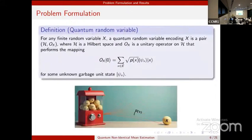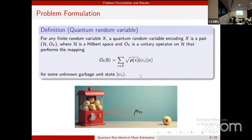Let me talk about the problem formulation. For the quantum estimation problem, the standard input model is a quantum random variable, which is a pair (H, O_X), where O_X is a unitary operator acting on the helper space H. It maps the zero quantum state to a quantum state such that measuring the second register gives result X with probability p_X. This quantum state can be seen as a generator of the classical random variable X, and one query to O_X is one quantum sample. The number of calls to O_X is the quantum query complexity.